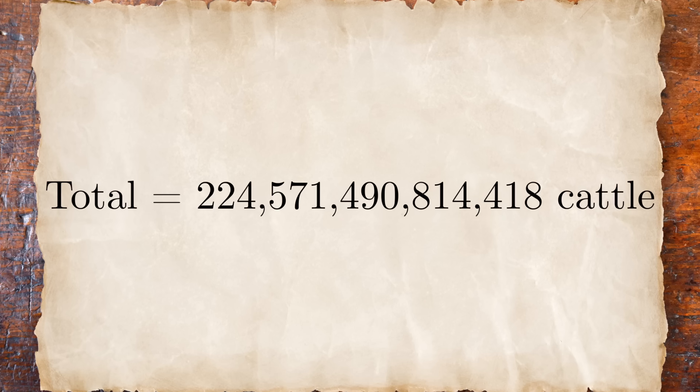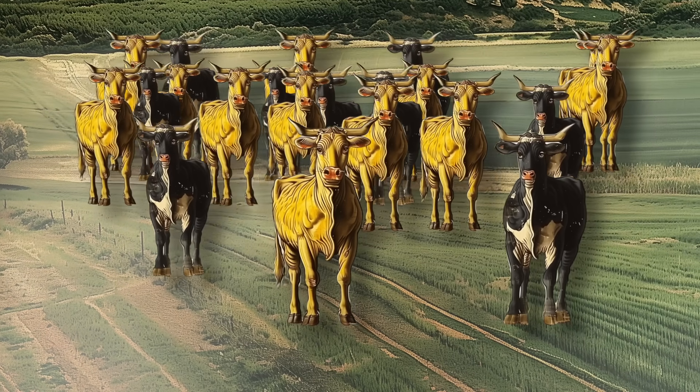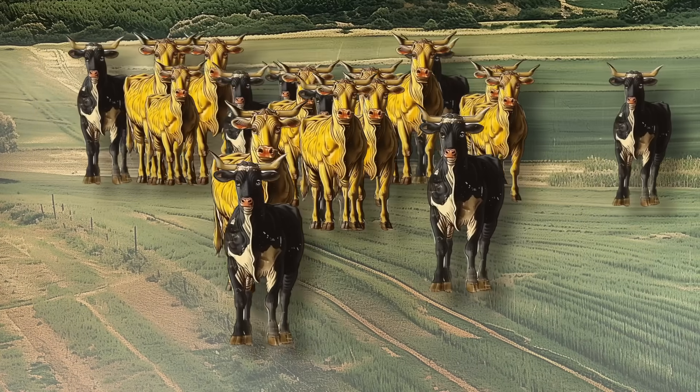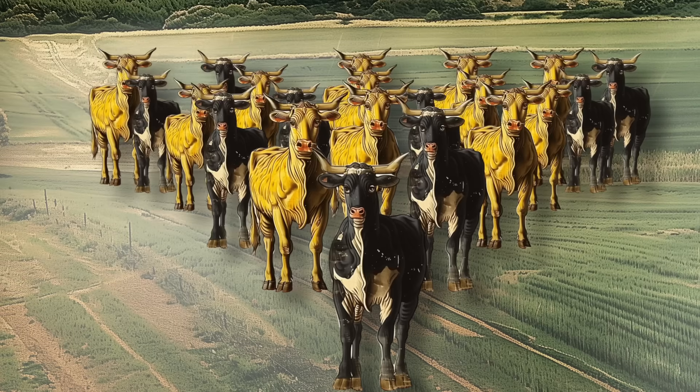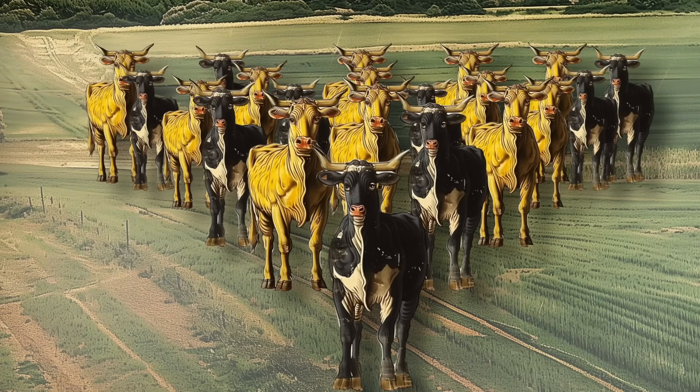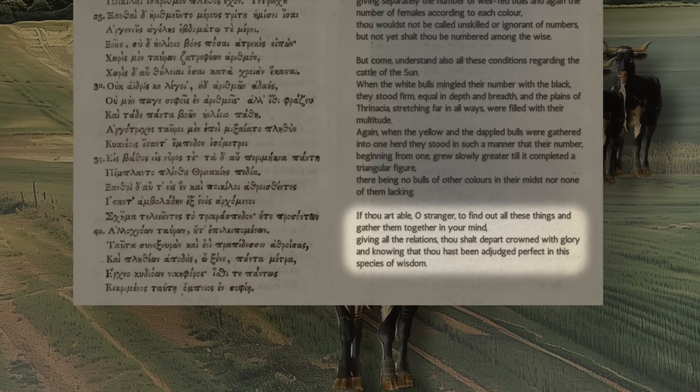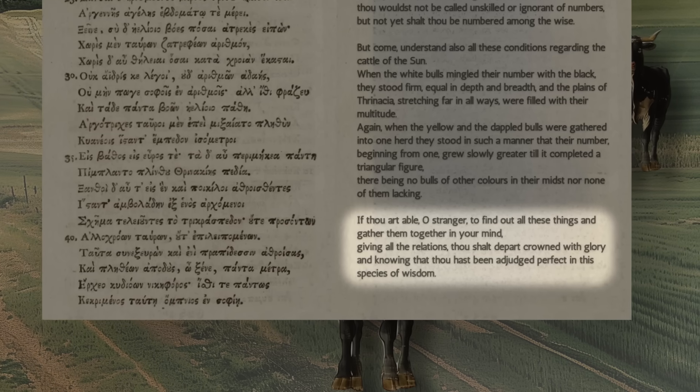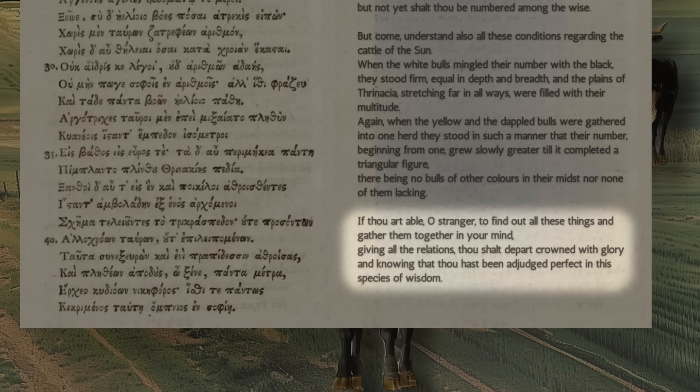So that's going to bring the total up to 224,571,490,814,418 cattle. And we're not even done. Again, when the yellow and the dappled bulls were gathered into one herd, they stood in such a manner that their number, beginning from one, grew slowly greater till it completed a triangular figure, there being no bulls of other colors in their midst, nor none of them lacking. If thou art able, O stranger, to find out all these things and gather them together in your mind, giving all the relations, thou shalt depart crowned with glory, and knowing that thou hast been adjudged perfect in this species of wisdom.